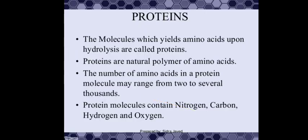When a polypeptide chain or protein undergoes hydrolysis, it yields amino acids. Therefore, the molecule which yields amino acids upon hydrolysis is called a protein. Since they are made up of amino acids, proteins are also known as natural polymers of amino acids. The number of amino acids present in a protein molecule may vary from two to several thousands — some proteins consist of only two amino acids, while others have chains of about a thousand amino acids.